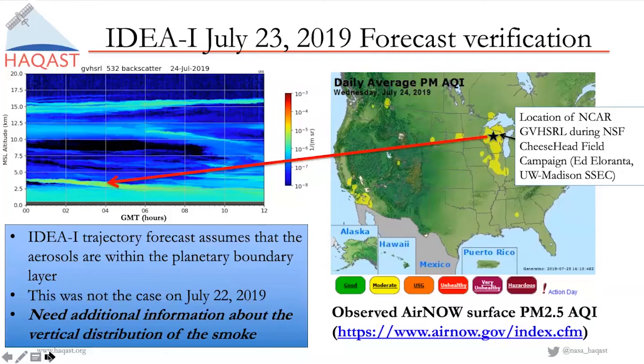So why did the trajectory forecast fail? The IDEA-I trajectory forecast, like IDEA, assumes that aerosols are within the planetary boundary layer when initialized, because we don't have information about the vertical profile of the aerosols. This was not the case on July 22nd, as we can see from the HSRL LIDAR over northern Wisconsin. To improve this forecast, we need additional information about the vertical distribution of the smoke.